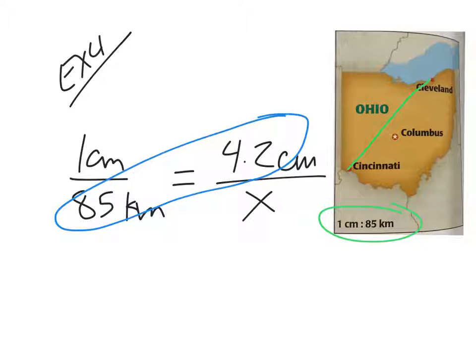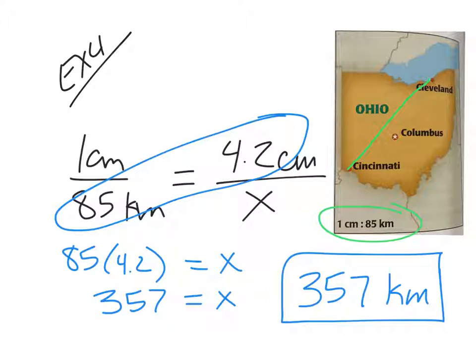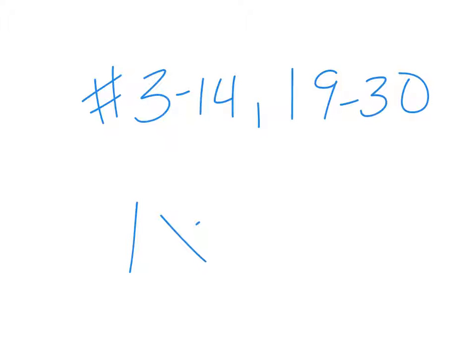So, we're going to cross multiply and say 85 times 4.2. 85 times 4.2 equals 357. So, the answer is 357 kilometers. It's a word problem. Any questions on how to do that? Scale models, it's really actually very easy once you learn the trick. And this, I know it's like one example, but this is probably what you get tested on more on your Iowa testing is how to do scale and proportions. So, keep after it. Just remember cross products. So, you're doing numbers 3 through 14 and then 19 through 30 and then IXL C5.